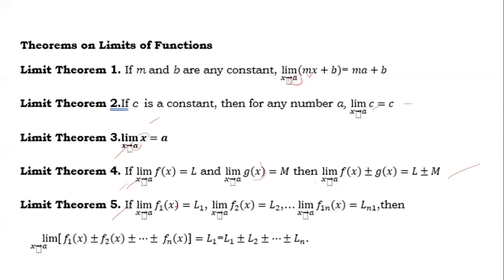Theorem five: if the limit of f₁(x) as x approaches a equals L₁, the limit of f₂(x) as x approaches a equals L₂, and so on until the limit of fₙ(x) as x approaches a equals Lₙ, then the limit of f₁(x) plus or minus f₂(x) and so on until fₙ(x) as x approaches a equals L₁ plus or minus L₂ and so on plus or minus Lₙ.